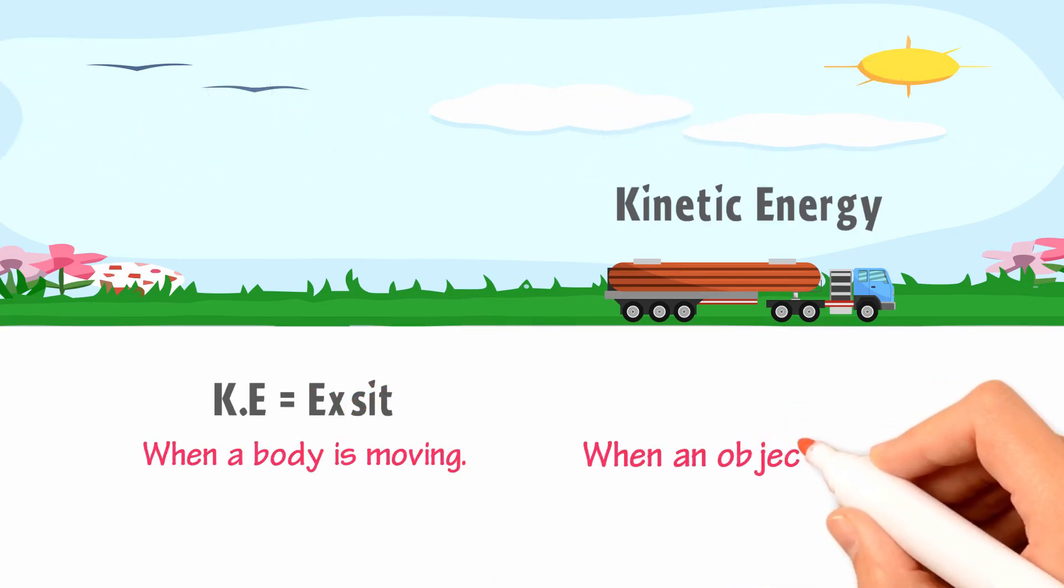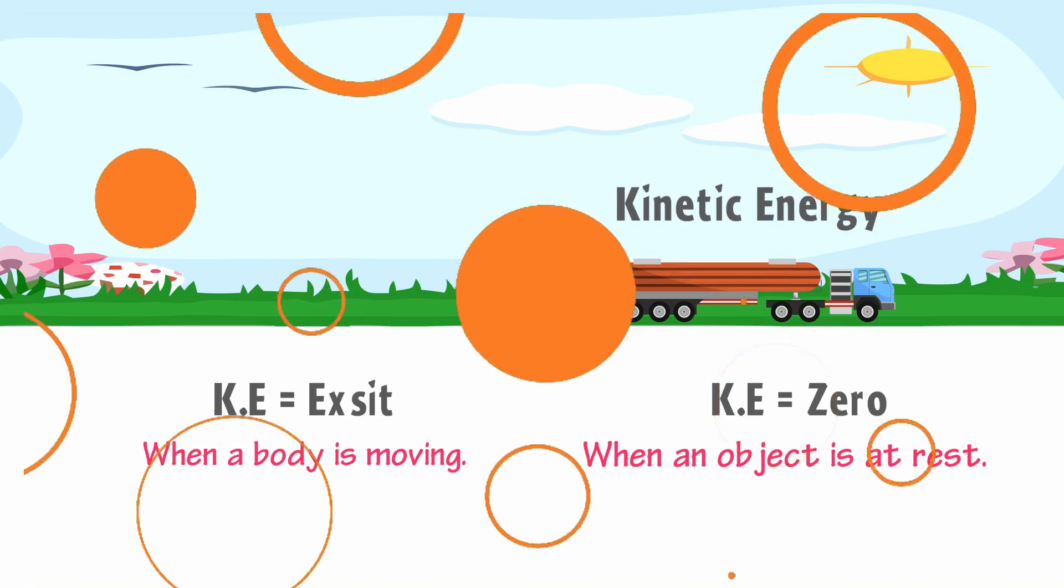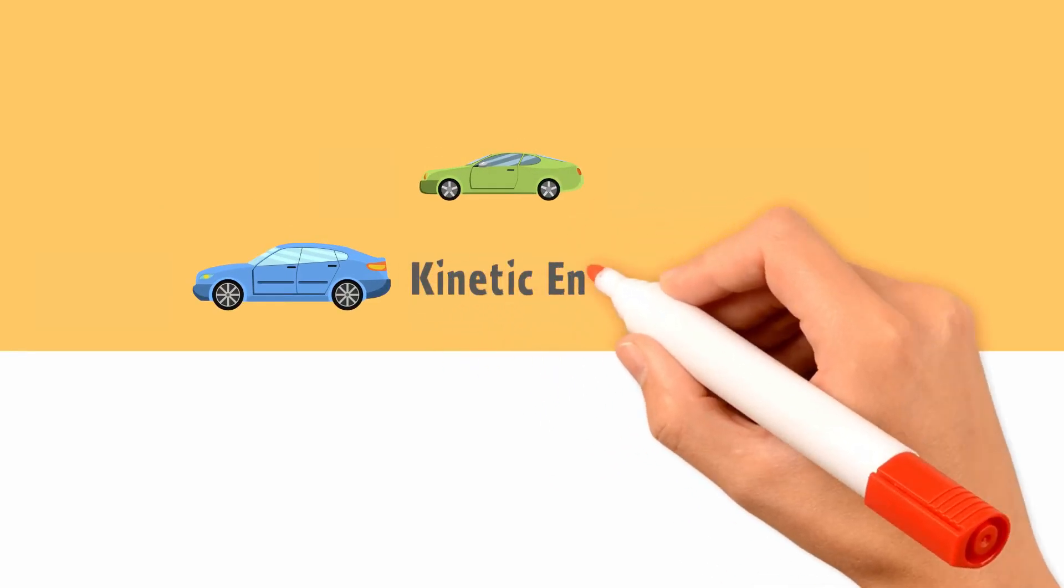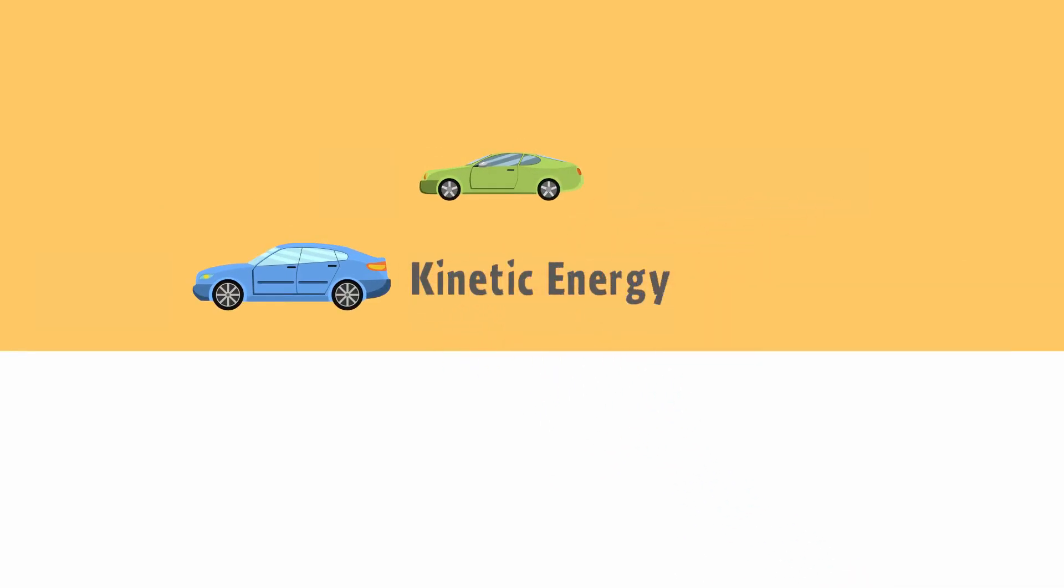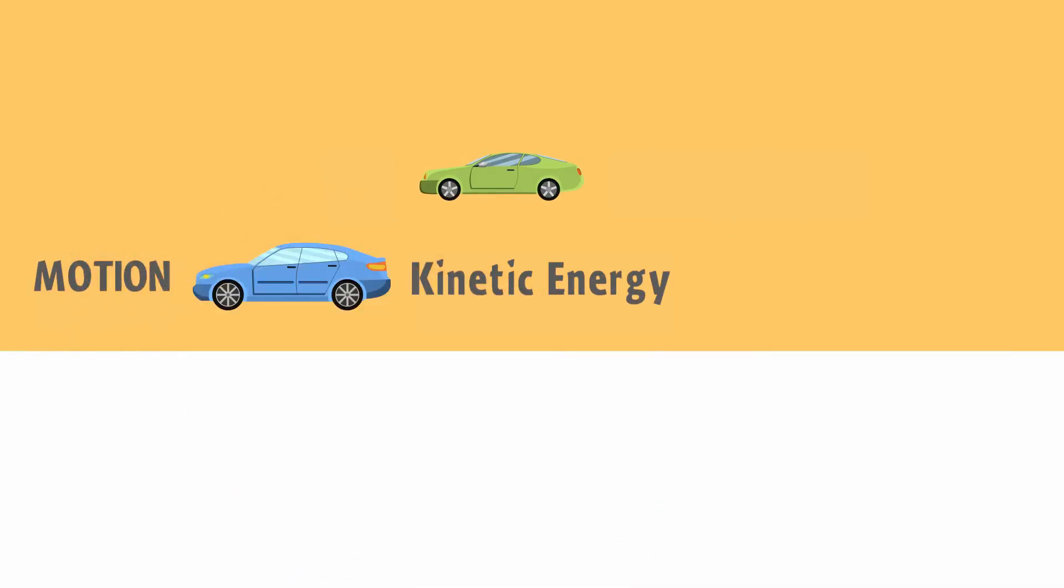Kinetic energy only exists when a body is moving. Once the object comes to rest, its kinetic energy becomes zero. For example, if one car is moving and another car is at rest, then the car moving possesses kinetic energy because this car is in motion or this car possesses velocity